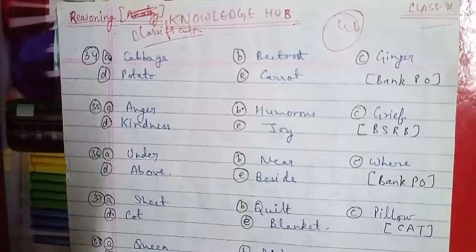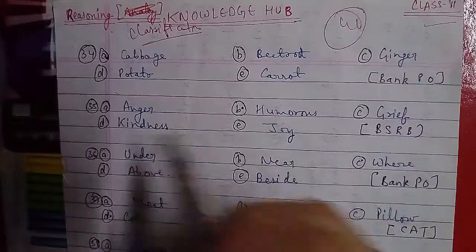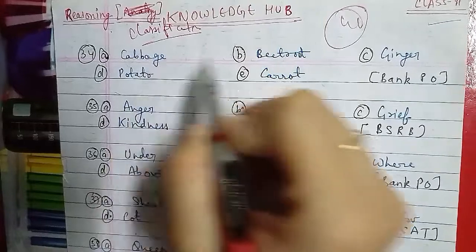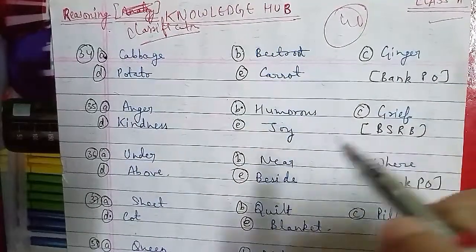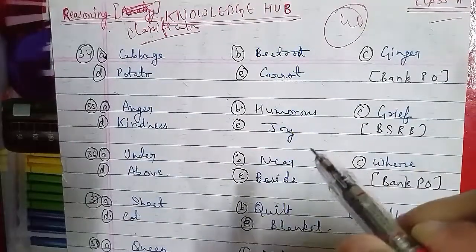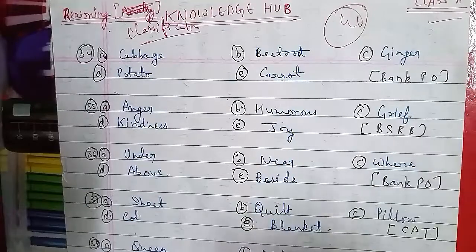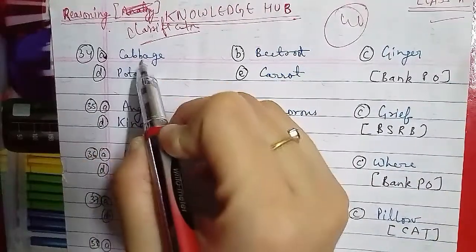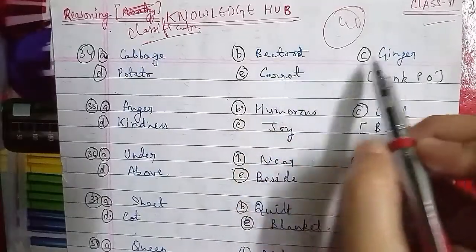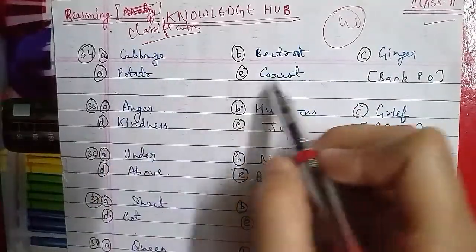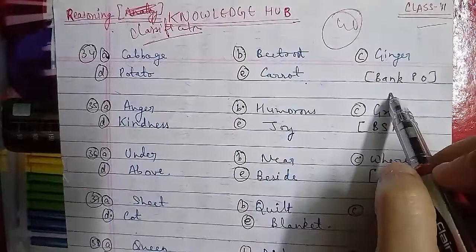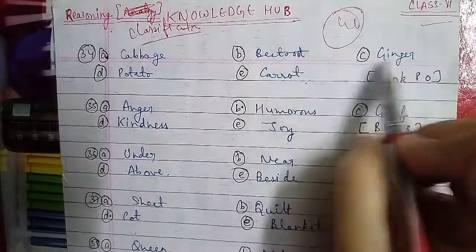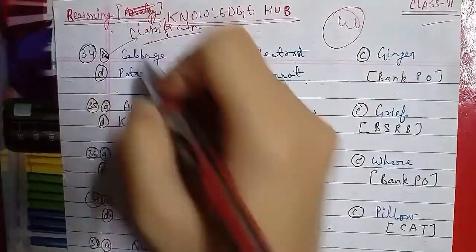Question number 34: Option A is Cabbage, B is Beetroot, C is Ginger, D is Potato, and E is Carrot. This was asked in the Bank PO question paper. These are all similar — root vegetables — and Cabbage is the different one. So your answer will be Cabbage.